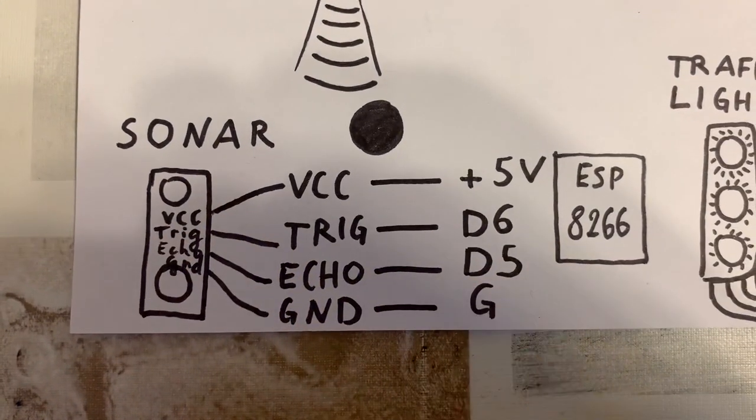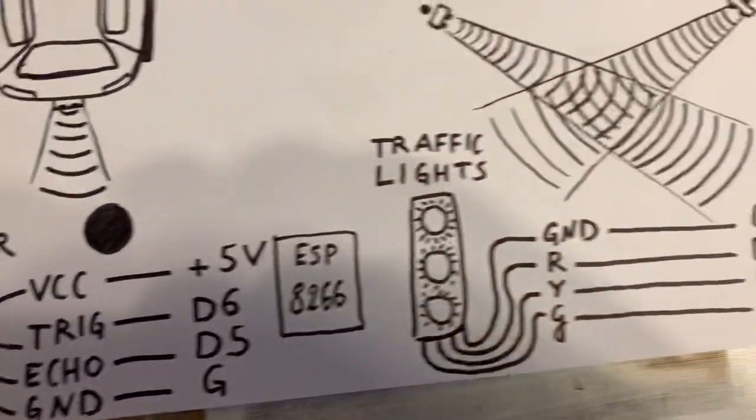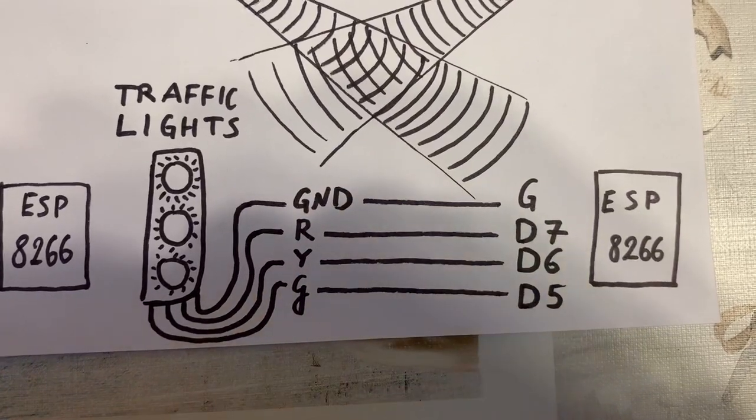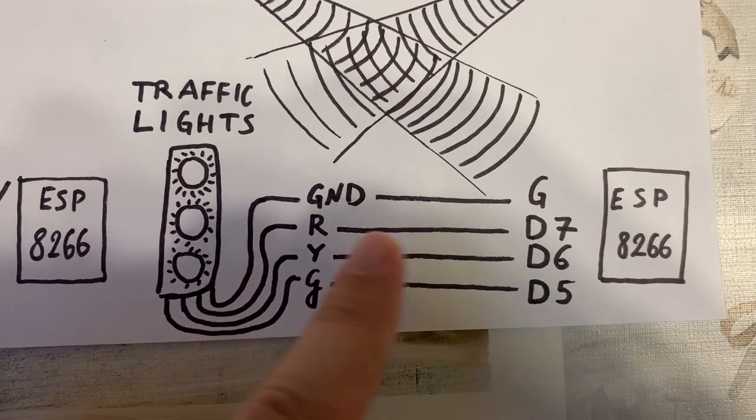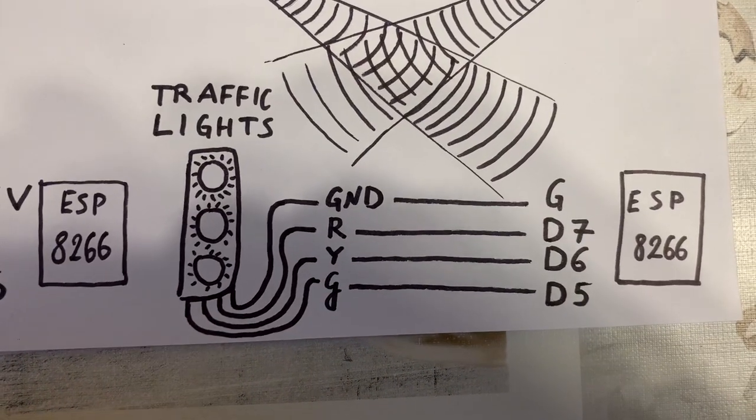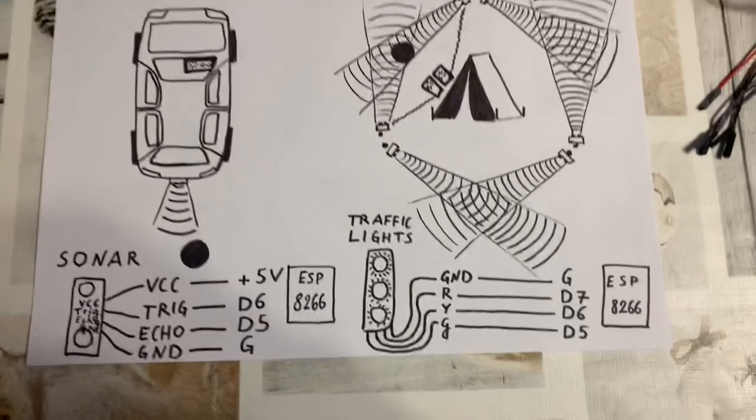The echo pin is connected to D5 and the ground pin is connected to G. In the traffic lights module the GND or ground pin is to G, the R for red to D7, the Y for yellow to D6 and G to D5 for green.